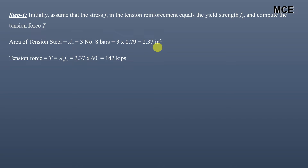The tension force is equal to the area of steel multiplied by the yield strength. Since our steel is Grade 60, the tension force will be equal to 2.37 × 60 = 142 kips.